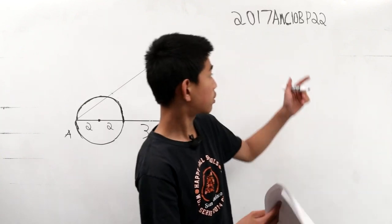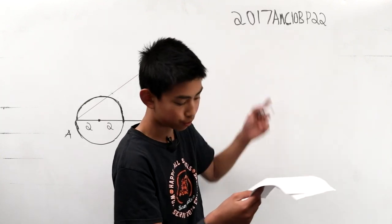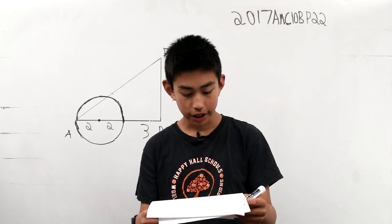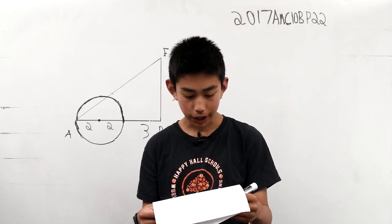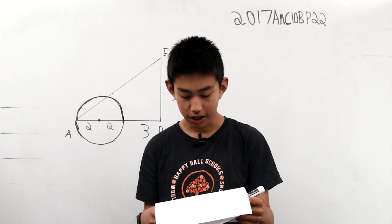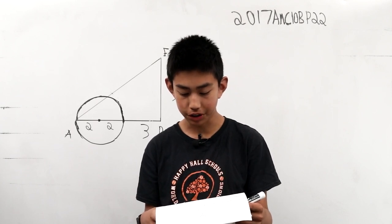We're solving problem 22 from AMC 10B from 2017. The diameter AB of a circle of radius 2 is extended to a point D outside the circle so that BD is 3.